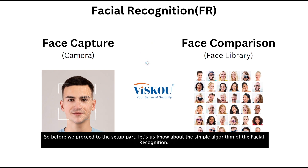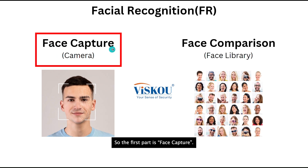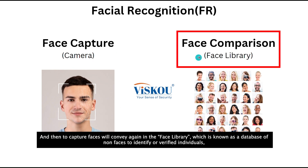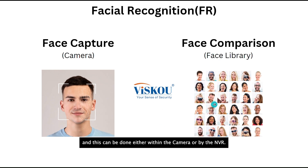Before we proceed to the setup, let's understand the simple algorithm of facial recognition. The first part is face capture, which is done by the cameras — they capture images of faces within their view. The captured faces are then compared against the face library, which is a database of known faces used to identify or verify individuals. This can be done either within the camera or by the NVR.